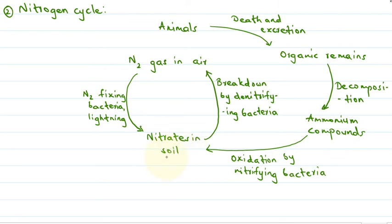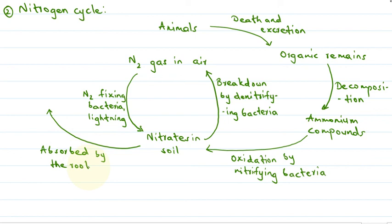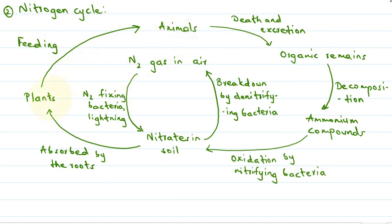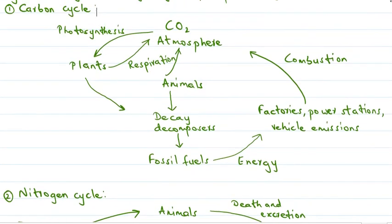Now these nitrates that are present in the soil are absorbed by the roots of plants. The roots of plants absorb these nitrates present in the soil. When animals feed on plants, again the nitrogen accumulated in the plants gets transferred to the animals, and this is how the cycle keeps on continuing.